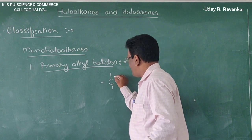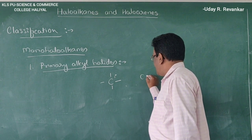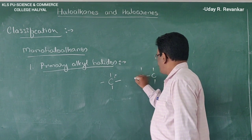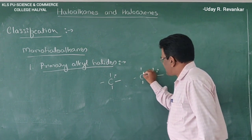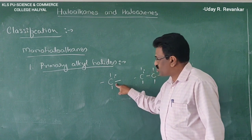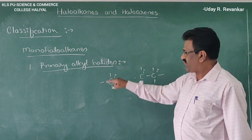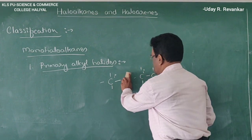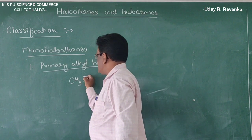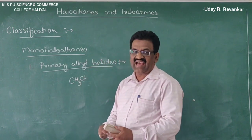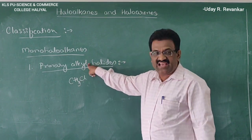If the halogen atom is attached to a primary carbon, these are called primary haloalkanes. For example, CH₃Cl — methyl chloride, also called chloromethane. Similarly, ethyl bromide (C₂H₅Br) is also called bromoethane.